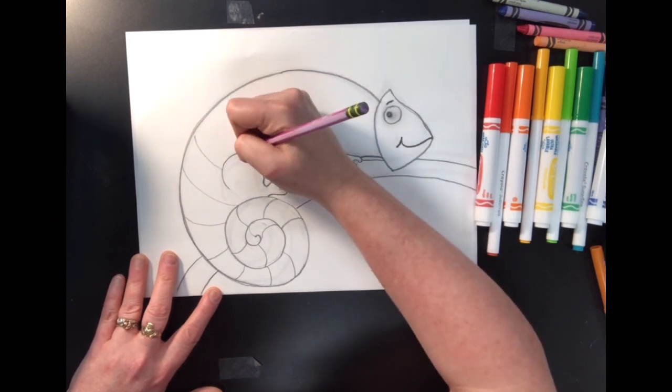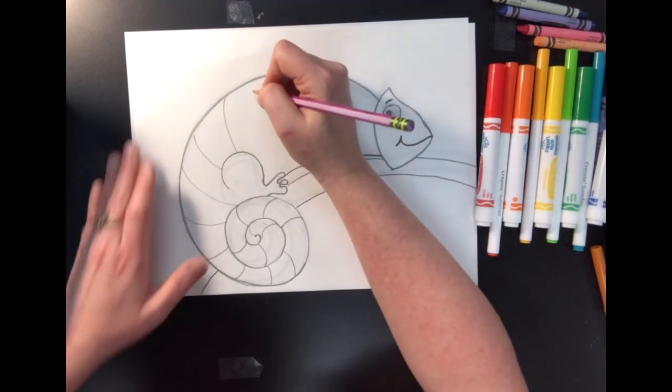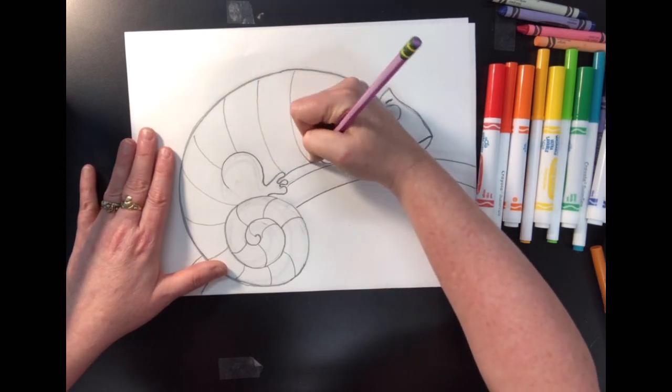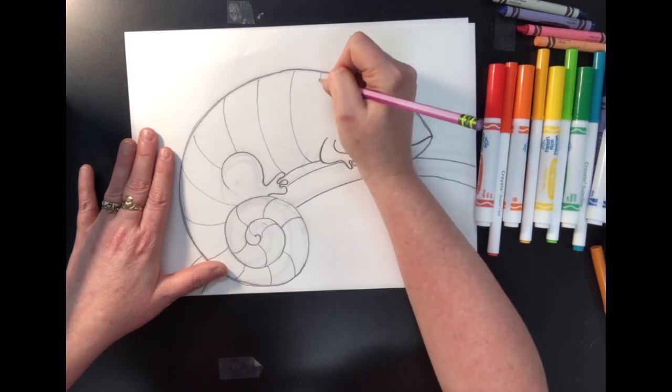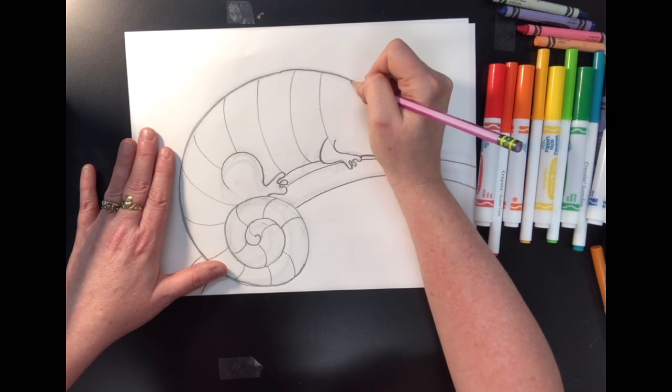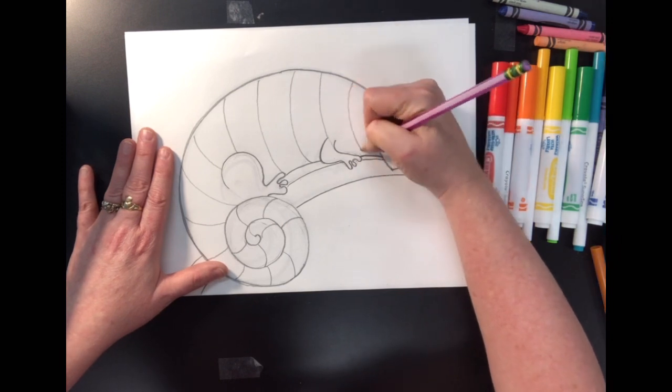I'm going to skip around the leg, continue my curved lines. Curved lines just look better on the chameleon than straight lines because his body is curved, so it makes sense to use curved lines. There.